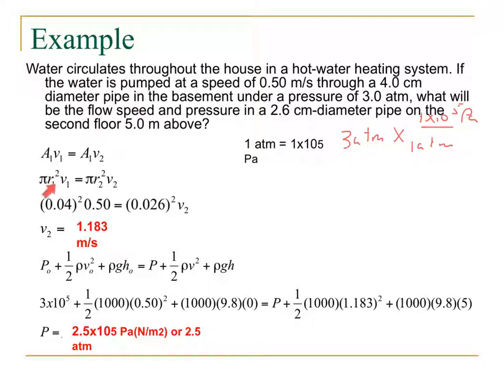If we look at our radius, we get 0.04 squared, and we get that because we had our 4 centimeters and we converted that over to meters. So 4 centimeters is 0.04 meters. So we square that, we multiply that times our 0.5, which is our velocity that we have right here.